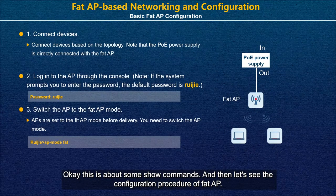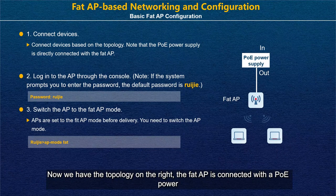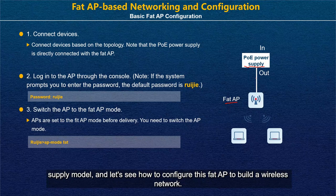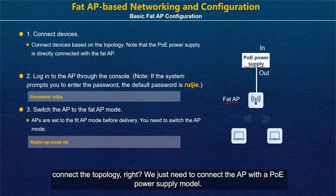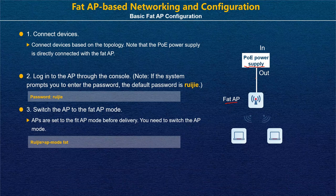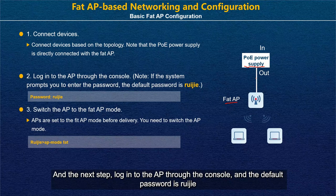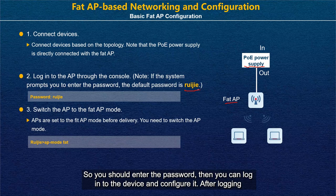Let's see the configuration procedure of FATAP. In the topology, FATAP is connected with a PoE power supply module. The first step is to connect the devices following the topology. Step two: login to the AP through the console. The default password is 'admin' (rejected by default), so enter the password, then you can log in and configure the device.